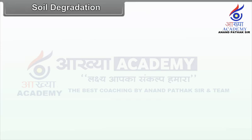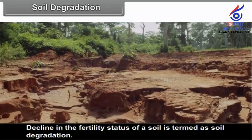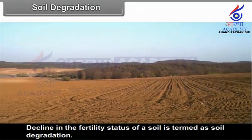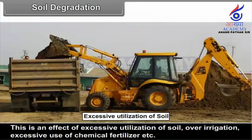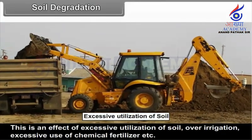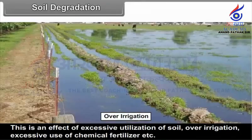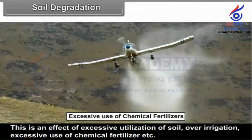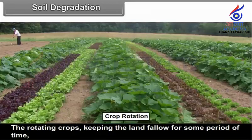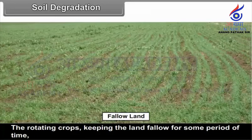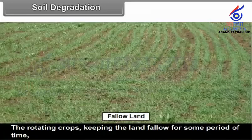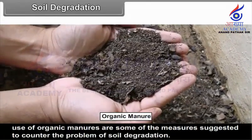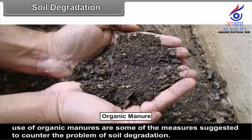Soil Degradation. A decline in the fertility status of a soil is termed as soil degradation. This is an effect of excessive utilization of soils, over-irrigation, excessive use of chemicals, fertilizers, etc. Rotating crops, keeping the land fallow for some period of time, and use of organic manures are some of the measures suggested to counter the problem of soil degradation.